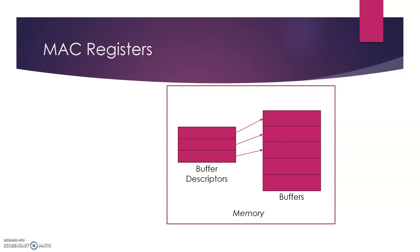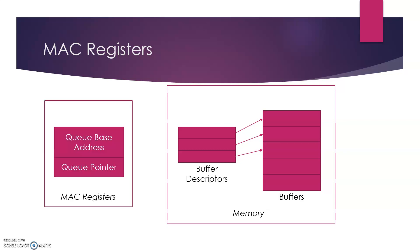We also need to have control over the buffer descriptor - that is which one is being processed currently and which buffer descriptor is next in queue. And that is precisely taken care of by the MAC registers. Now these are queue base address register and queue pointer register.